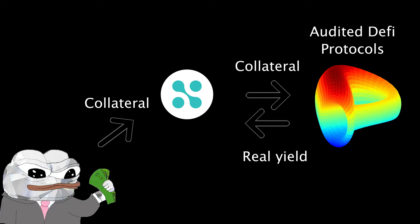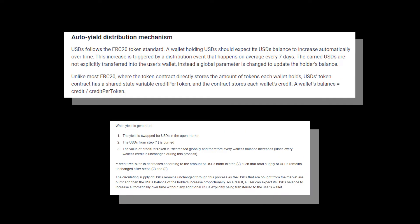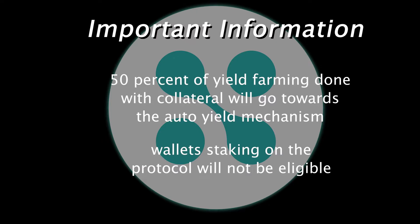With the collateral that users deposit into the Sparex protocol, Sparex smart contracts are able to use that collateral to farm yield on other audited decentralized protocols and slowly earn a profit for all USDS holders. Some of these protocols include Aave, Curve, FRAX, and more. Using an interesting design mechanism in their smart contracts, Sparex is able to incrementally increase users' USDS positions through this yield farming without users ever needing to spend gas to claim their rewards. More information about how exactly this mechanism works can be found in their docs. Two things worth noting: only 50% of the yield farming done with users' collateral will go towards this auto-yield mechanism, and wallets who are staking on the protocol will not be eligible to earn auto-yield on their USDS.